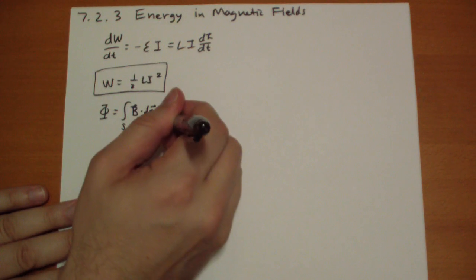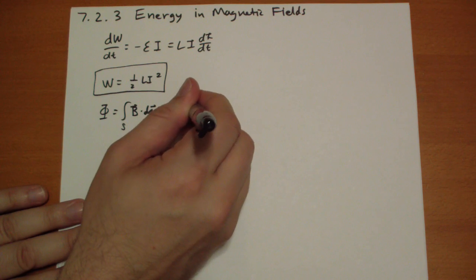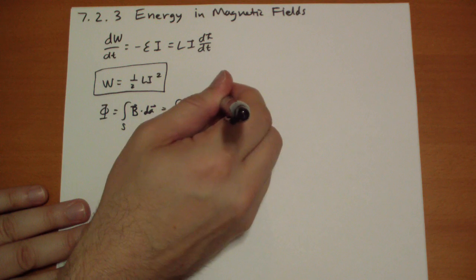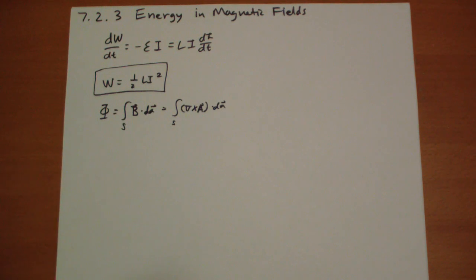And B is just the curl of A, our magnetic vector potential friend. By the way, this potential might seem a little weird to you, but later on, we're going to have some really fun potentials. We're just going to have a seriously fun time with these guys.